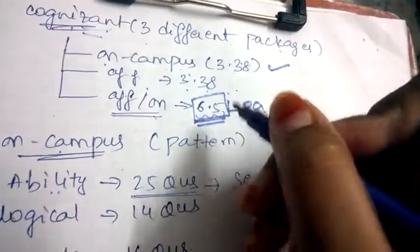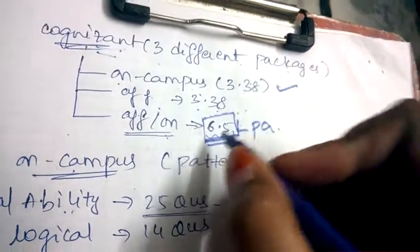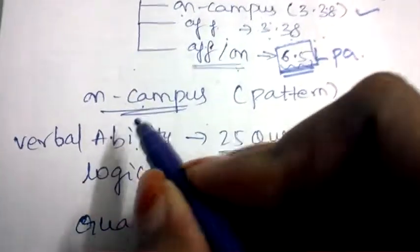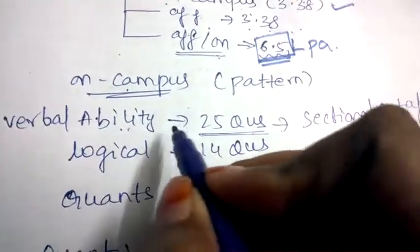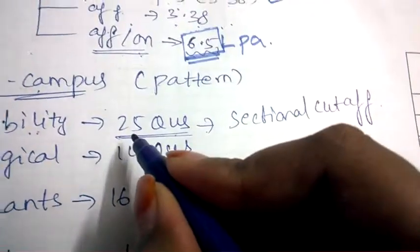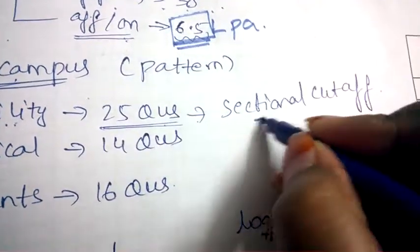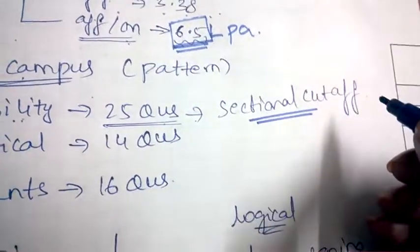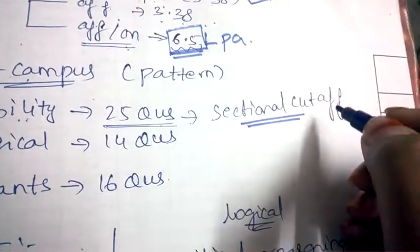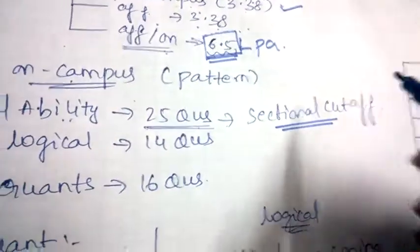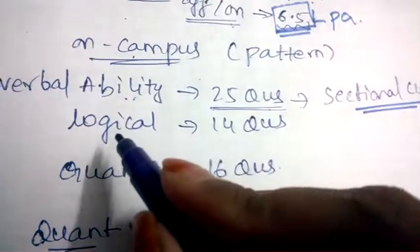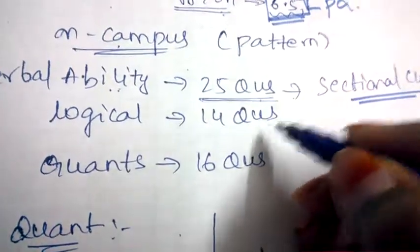Coming to pattern one for on-campus, there is verbal ability. Coming to verbal ability, 25 questions will be asked and there will be sectional cutoff. For every section, there will be cutoff marks and you need to clear all the individual sections. Coming to logical, they'll be asking 14 questions.